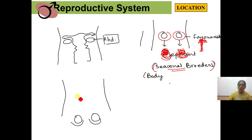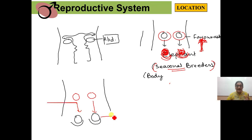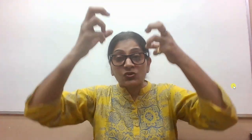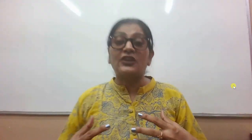In human beings, you will be surprised to know that during the embryonic stage, the testis is also abdominal initially. But around the fifth month of development — remember, the baby stays in the mother's body for 9 months — the testis descends and in human beings it is permanently lodged in the scrotum. Once permanently lodged there, it gets favorable temperature throughout life, allowing spermatogenesis year-round. That is why human beings are continuous breeders.